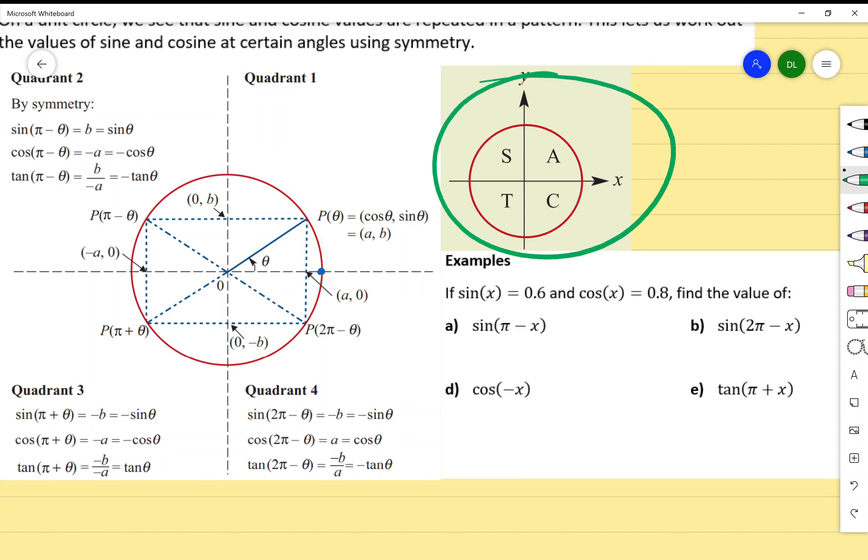It is, so I just write equals 0.6. You can imagine it as just being reflected across this line here, and if that point there was 0.6, then we're just picking that point there on the other side.